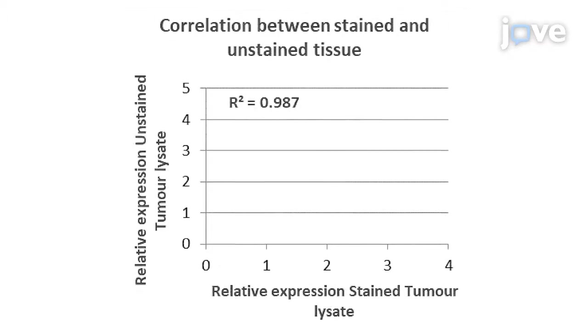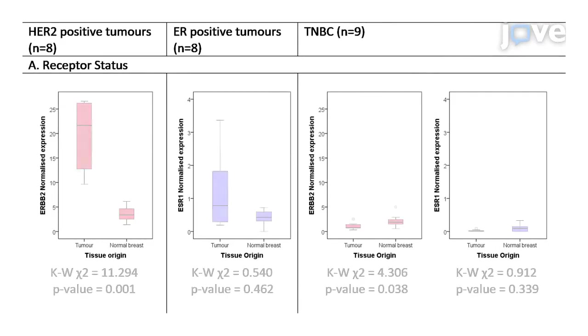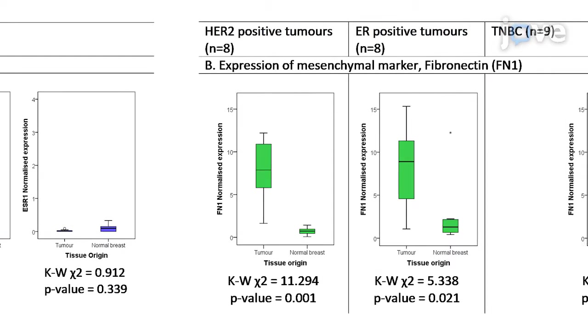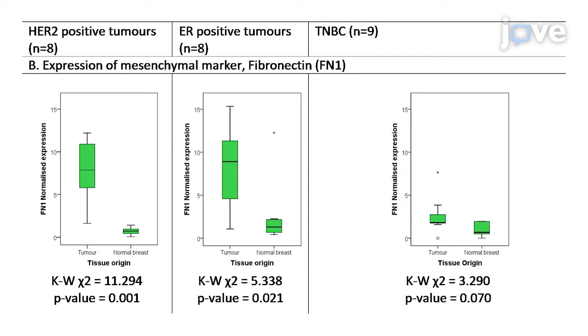The described method has been applied for the simultaneous measurement of 40 transcripts in H&E stained, micro-dissected, highly degraded, FFPE material. Using this method, it is possible to show accurate characterization of receptor status and differential expression of the mesenchymal marker, FN1, when comparing tumor and matched control tissue in the various receptor positive and negative subtypes.